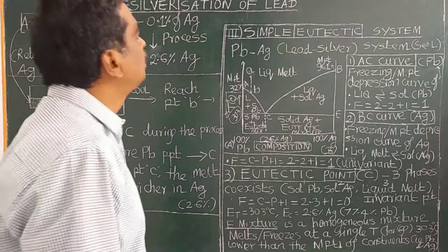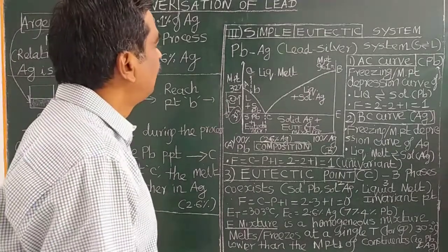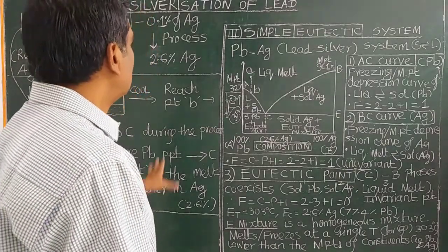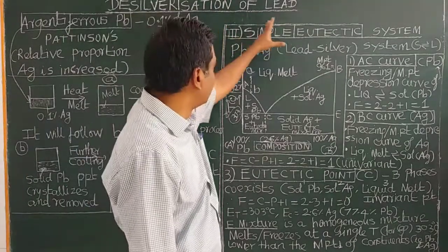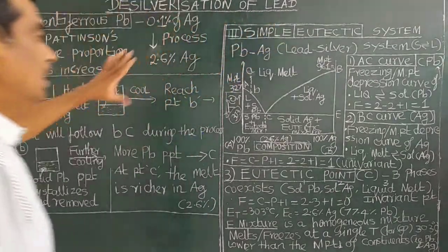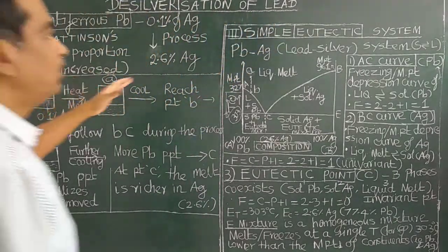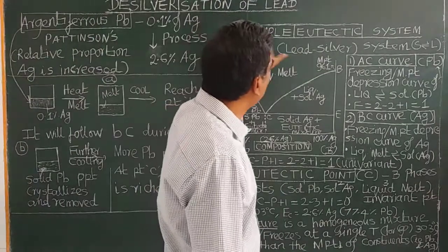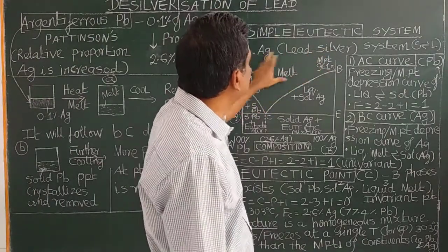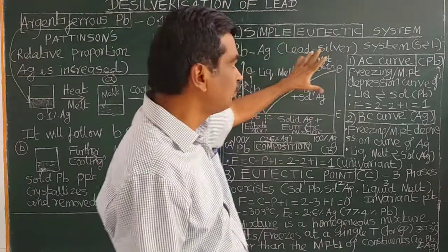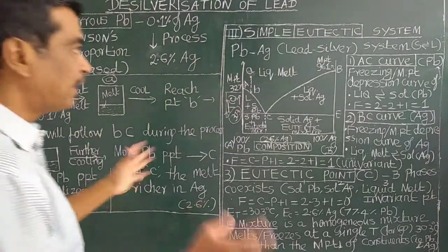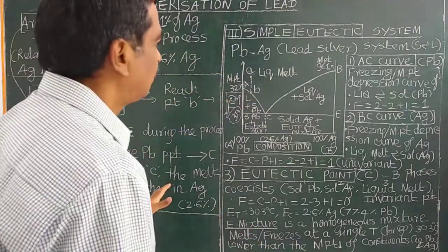Good morning. Today we will study about the desilvering system, and also we will quickly revise the simple eutectic system. For example, the lead-silver system we have studied in the previous class. We will revise quickly.